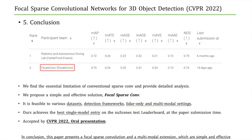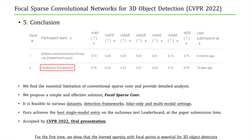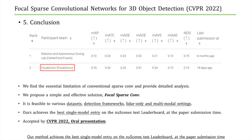In conclusion, this paper presents focal sparse convolution and a multimodal extension, which are simple and effective end-to-end solutions for LiDAR-only and multimodal 3D object detection. For the first time, we show that learned sparsity with focal points is essential for 3D object detectors. Focal and fusion sparse CNNs achieve leading performance on the large-scale nuScenes dataset, achieving the best single-model entry on the nuScenes test leaderboard at the time of paper submission. This work is accepted by CVPR 2022 as an oral presentation.